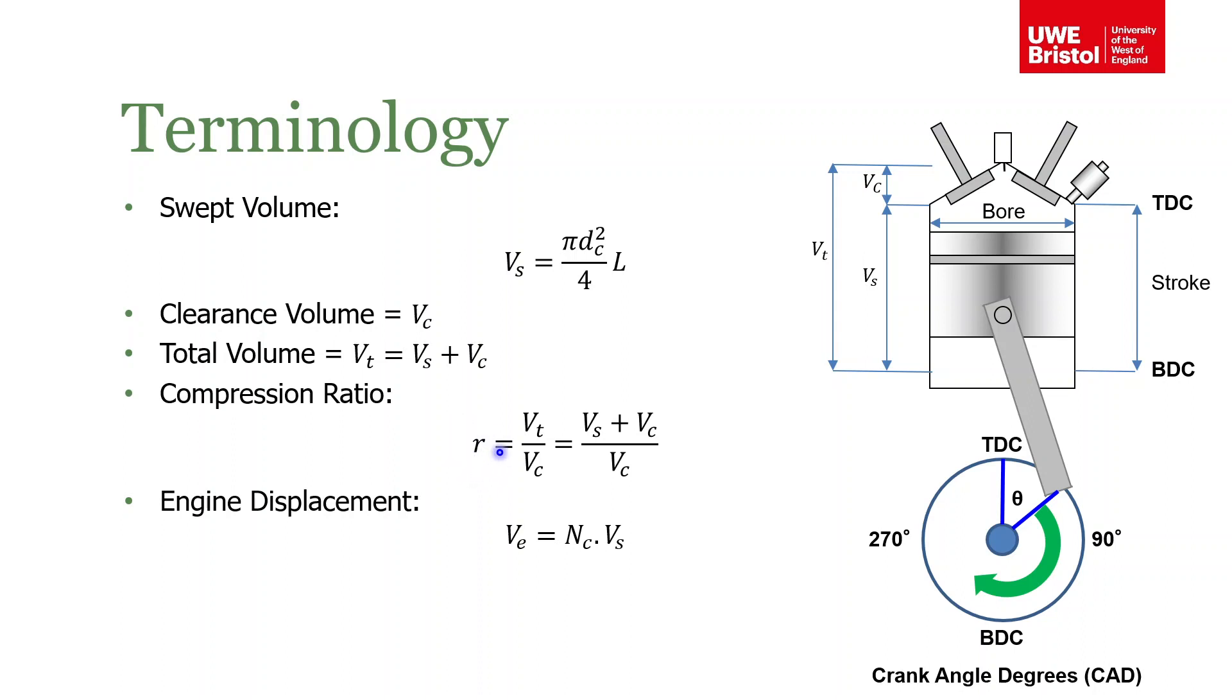The compression ratio is the ratio of the total volume to the clearance volume—basically how many times the gas has been compressed. Because the total volume can be written as the swept volume plus the clearance volume, you can rewrite it as this. Finally, the engine displacement, which you often see—you know, if you're looking at cars where it's one liter, two liter, or whatever—is the number of cylinders times the swept volume of each cylinder.